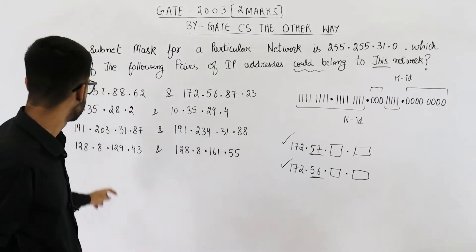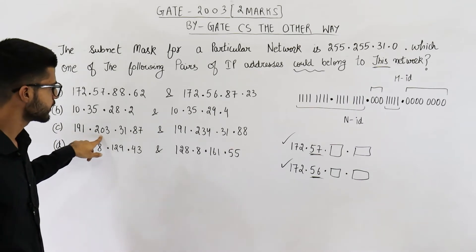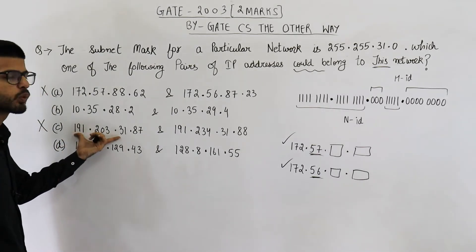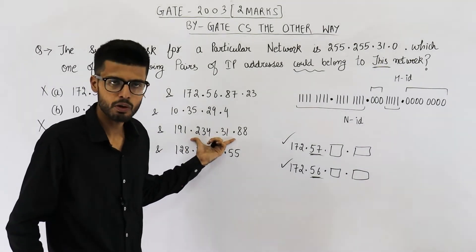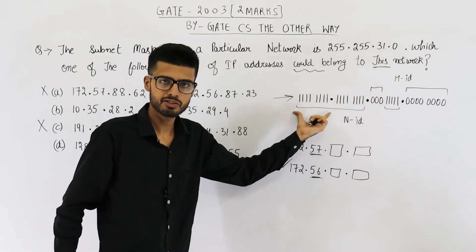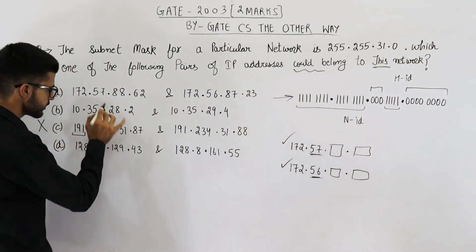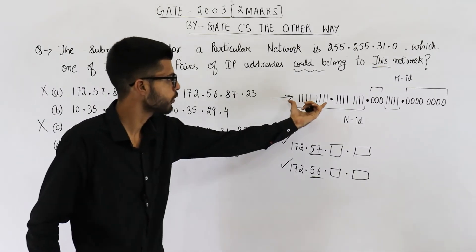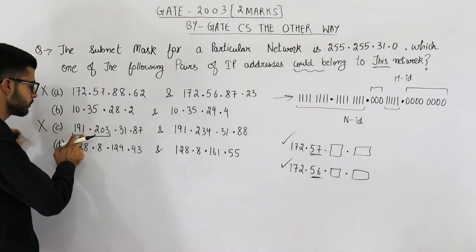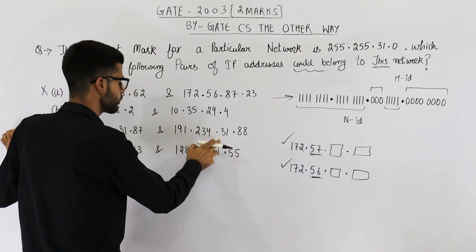Option C is 191.203 and 191.234. For similar reasons, you can reject option C also, because this one will belong to some other network and this IP address will belong to some other network according to the given subnet mask. We have all 8 bits in the first octet as ones and all 8 bits in the second octet as ones, so the network ID will begin with 191.203 for the first and 191.234 for the second. Both are in different networks.